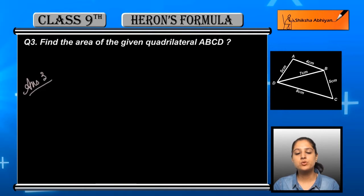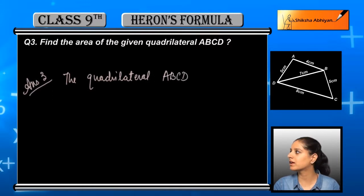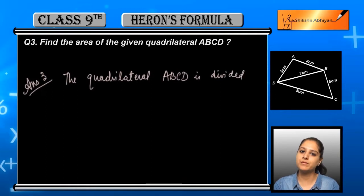First of all, the quadrilateral given is named ABCD, and all four sides and a diagonal values are given. Looking at the quadrilateral, you can say that the diagonal divides it into two triangles. So the quadrilateral ABCD is divided into two triangles. First we need to identify which two triangles it is divided into.